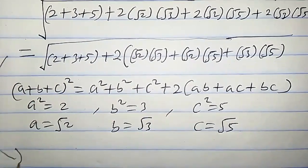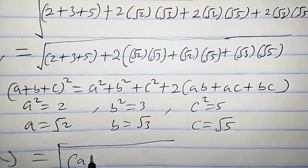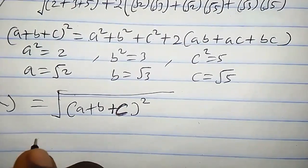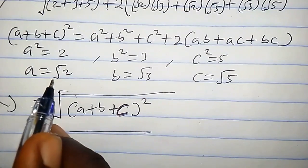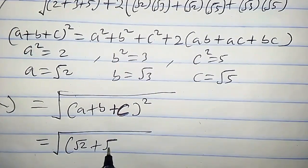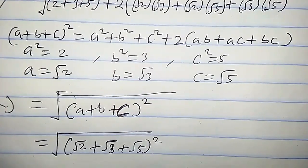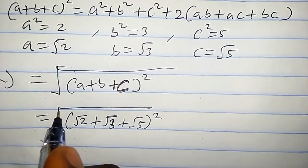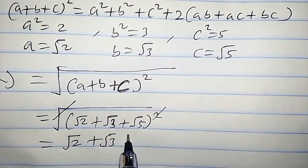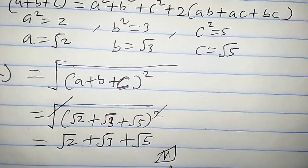From here we have this equal to square root of (a+b+c) all squared. This equals the square root of (√2 + √3 + √5) squared. So this equals √2 + √3 + √5. This is the required solution. You can confirm this by checking it in your calculator. That's it for this video, peace.